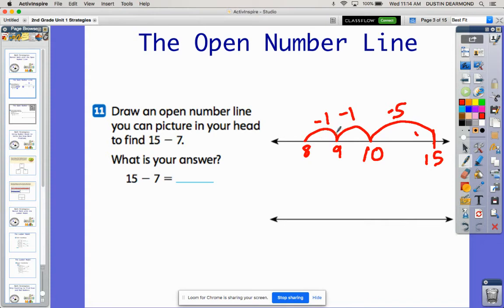All right, so 15 where we started minus seven. So here's my five, six, seven—I took away seven and helped me get back to where I needed to be, which was here at eight. So 15 minus seven is eight.